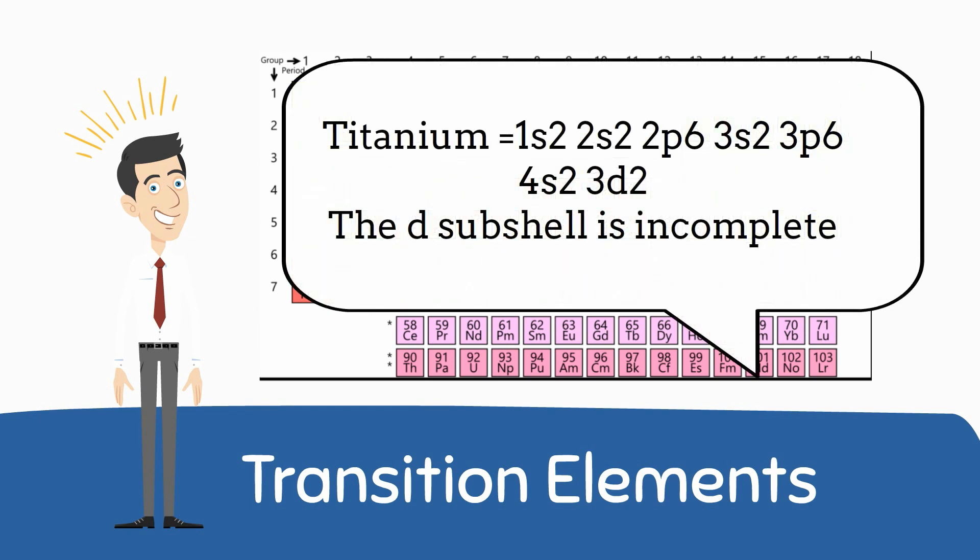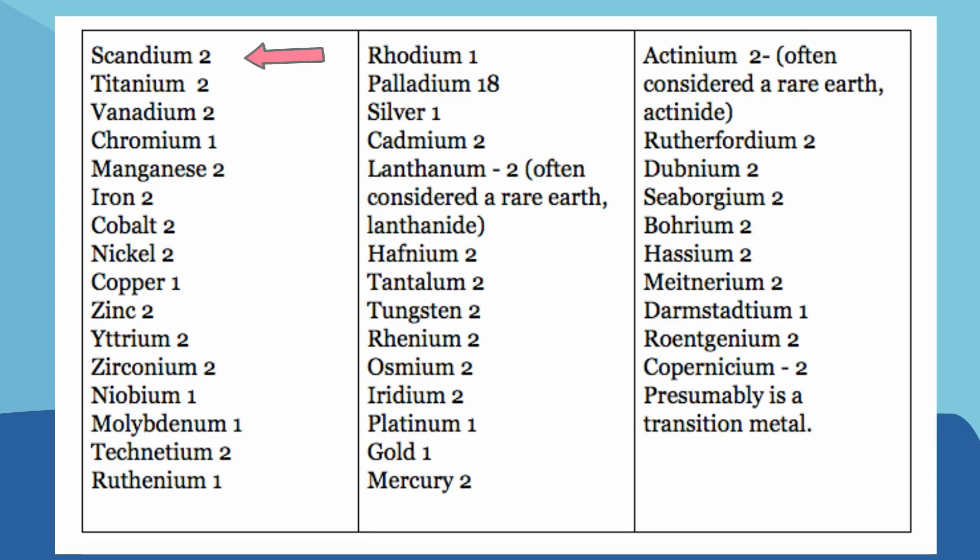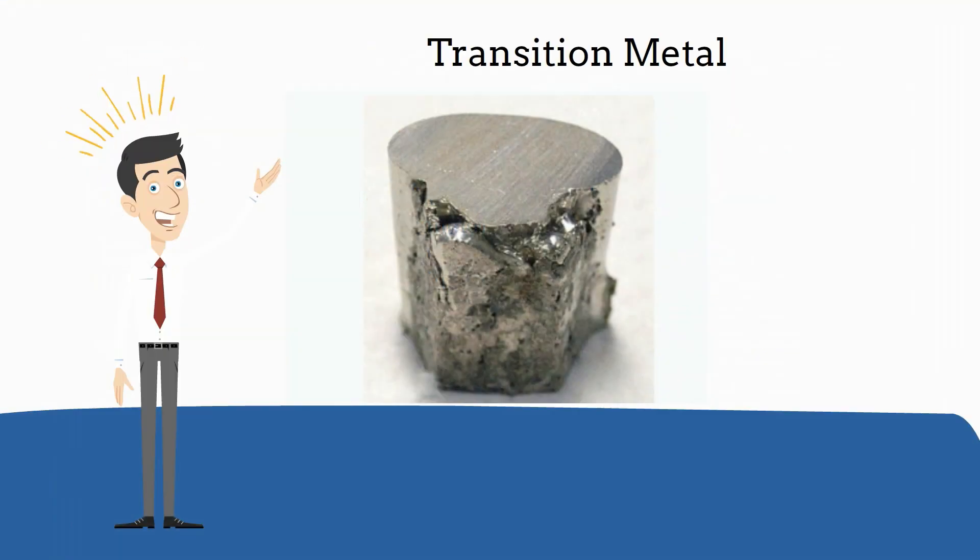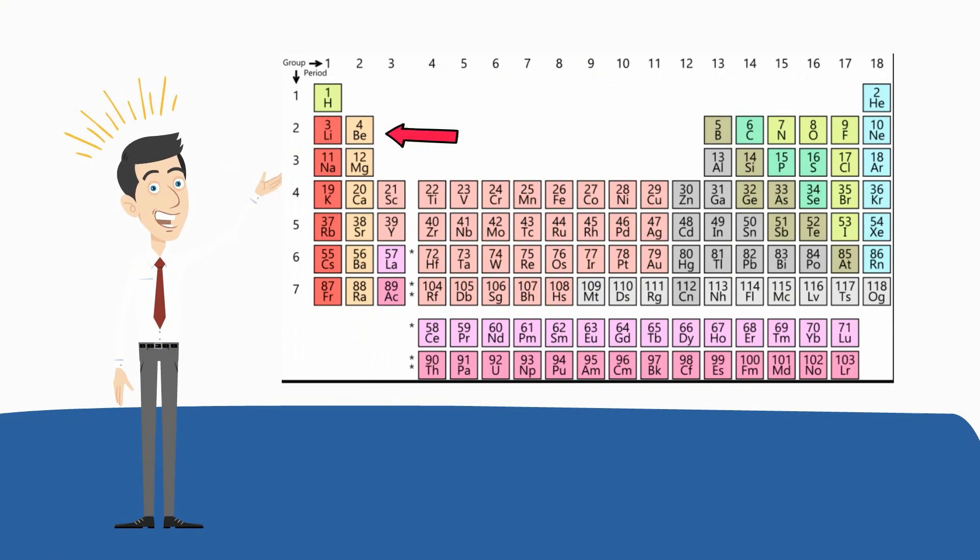Here is the list of the transition metals with their number of valence electrons. The transition metals are metallic elements that help serve as a bridge between the two sides of the table.